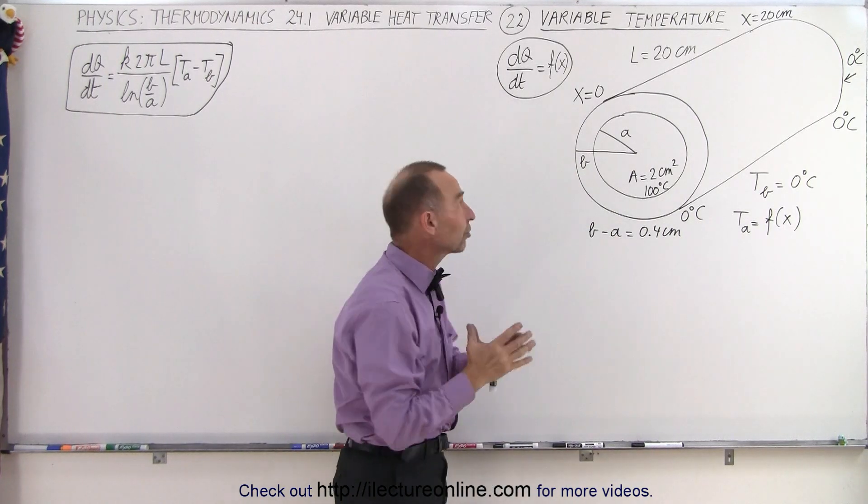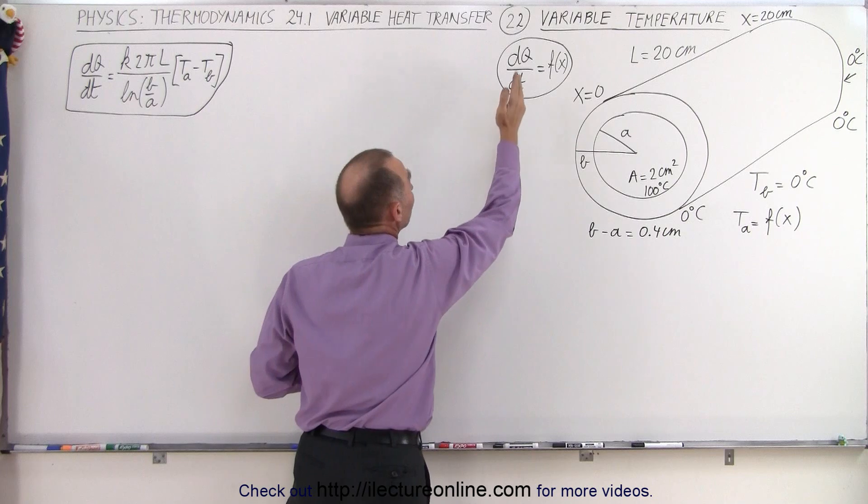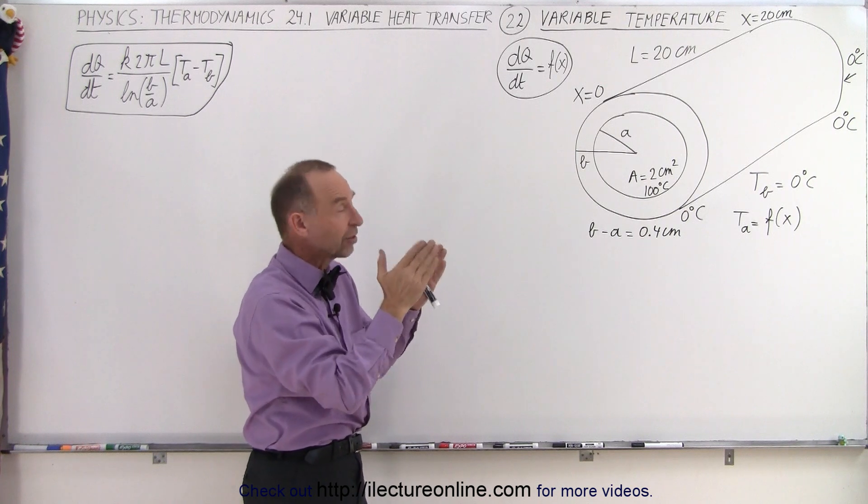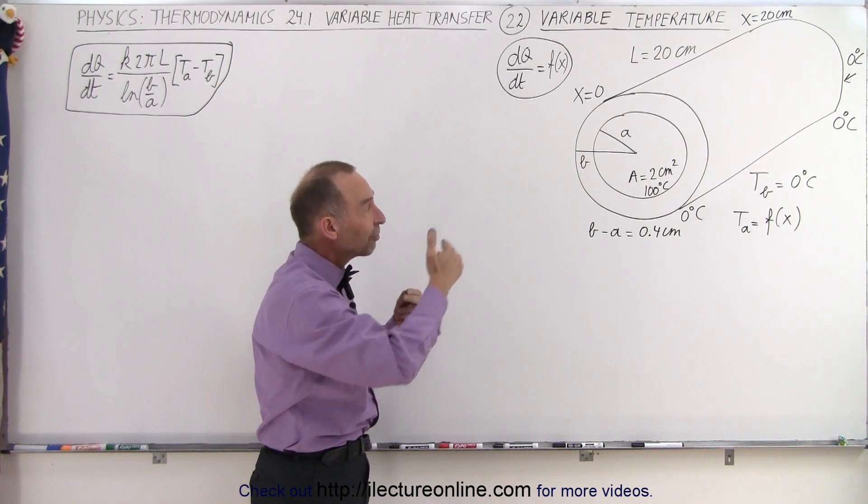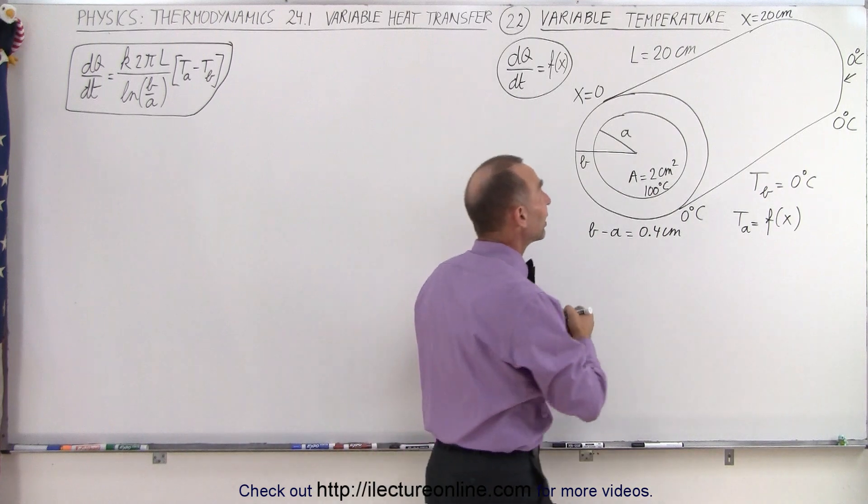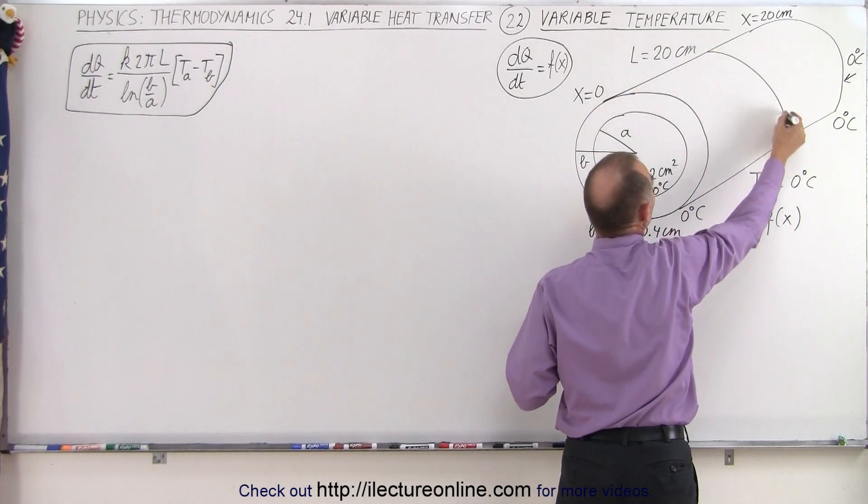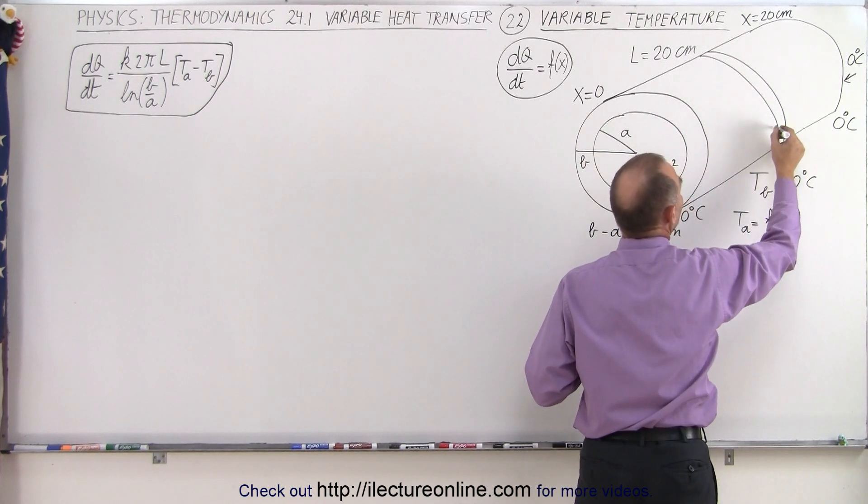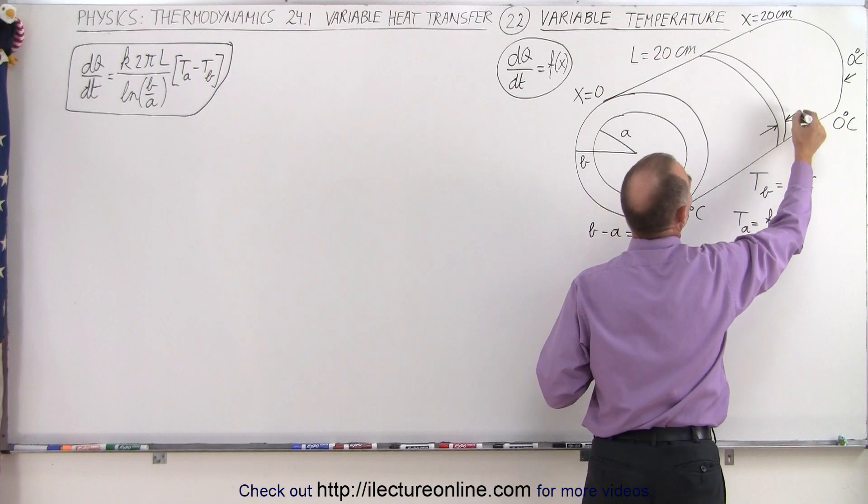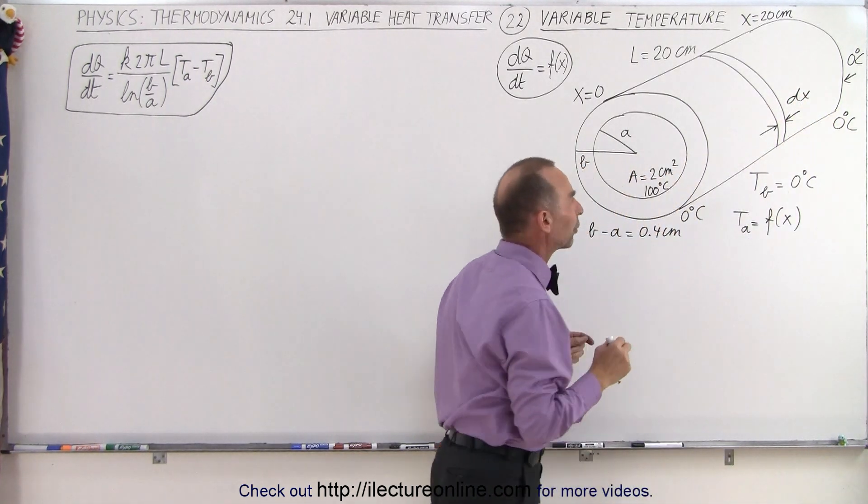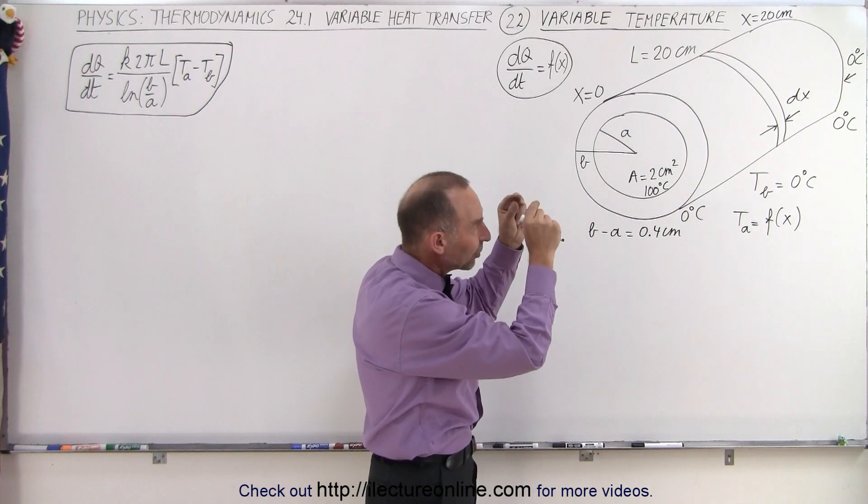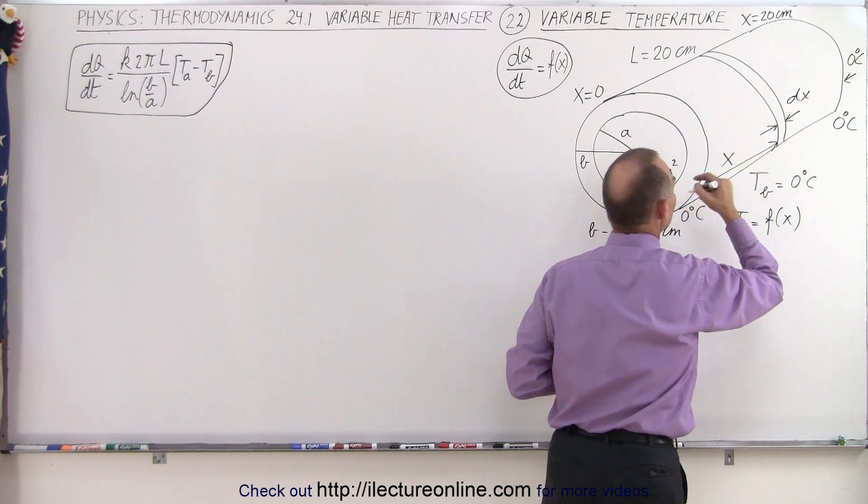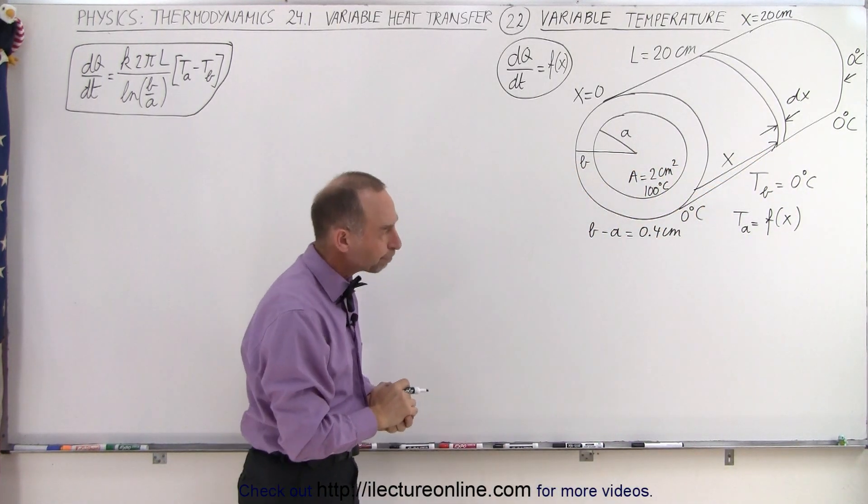What we're trying to do here is come up with an equation, dq/dt, that is a function of position X. We're trying to find the rate of heat transfer across the insulated material as a function of position. The way to do that is to think of it as grabbing a small little segment along the length of this pipe, and the distance from there to there would be called a dx. We're going to find the dq/dt for that particular dx, for that particular location, which is a distance X away from the front end of the cylinder.